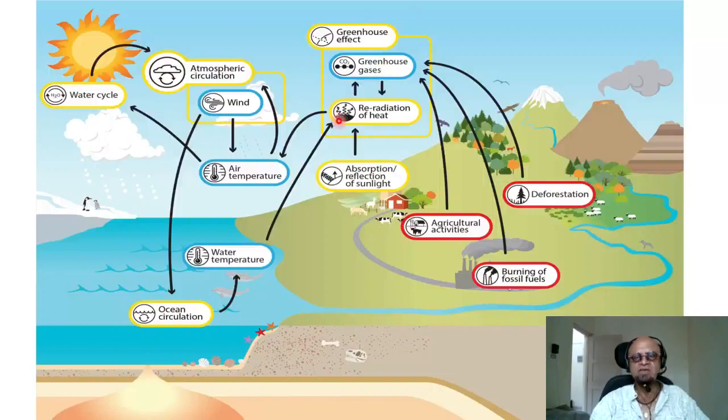Now what are human beings doing? Remember we talked about these feedbacks and there are some loops you can see, because winds drive ocean currents, winds drive water cycle by evaporation and so on. Human beings, what are we doing?